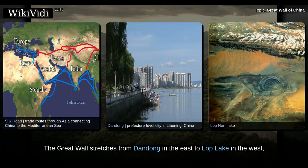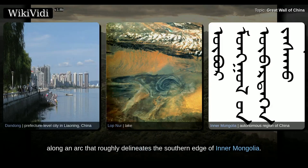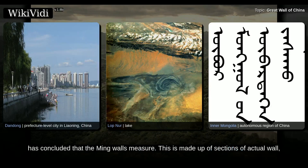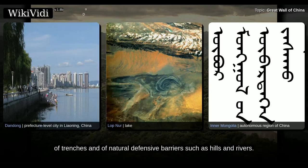The Great Wall stretches from Dandong in the east to Lop Lake in the west, along an arc route that roughly delineates the southern edge of Inner Mongolia. A comprehensive archaeological survey using advanced technologies has concluded that the Ming walls are made up of sections of actual wall, trenches, and natural defensive barriers such as hills and rivers.